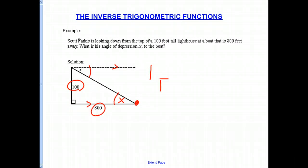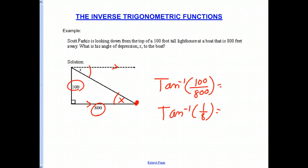But in this case, we're going to use the inverse tangent. And the inverse tangent of 100 over 800. So the inverse tangent of 100 over 800. And then we have to put that on our calculator. Of course, we could reduce 100 over 800 if we wanted to, to 1 over 8.